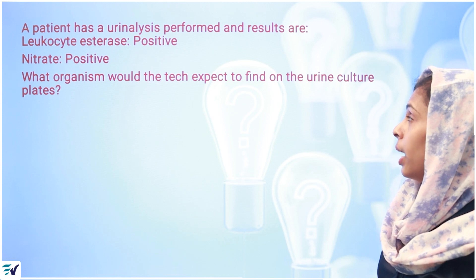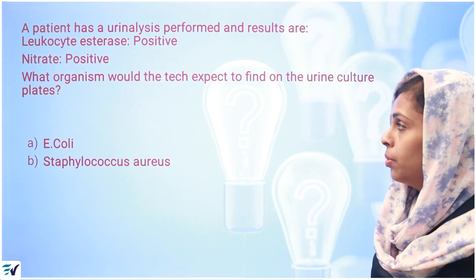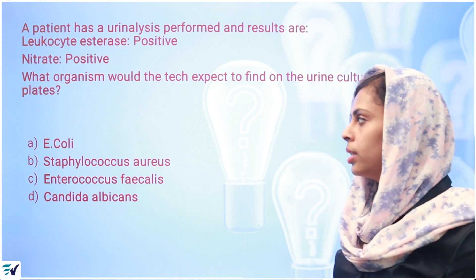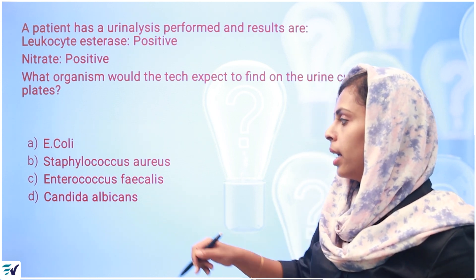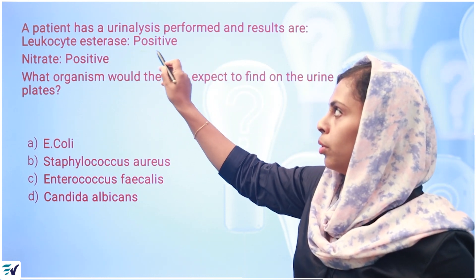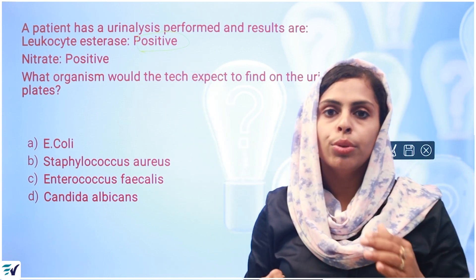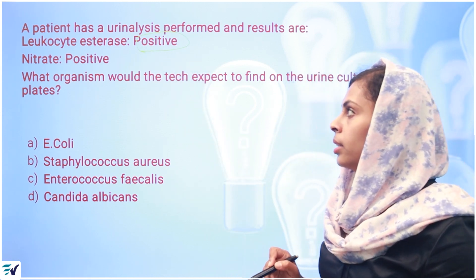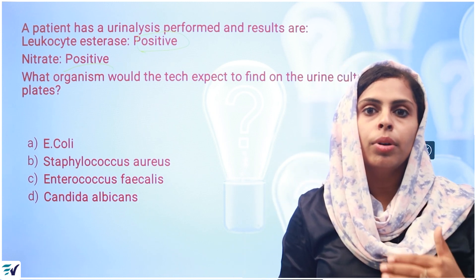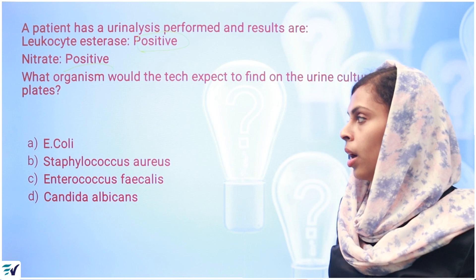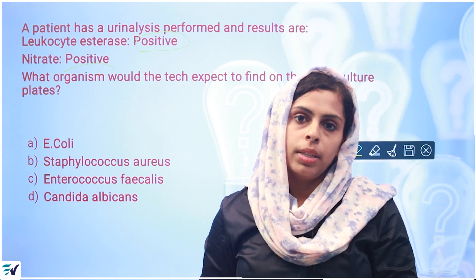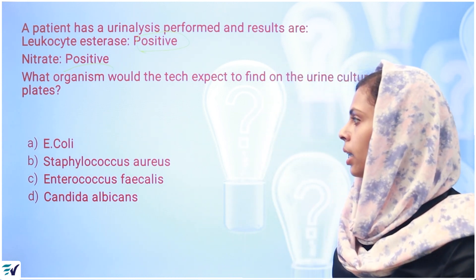Next question: A patient has a urinalysis performed and the results are leukocyte esterase positive and nitrate positive. What organism would the tech expect to find on the urine culture plates? Options are E. coli, Staphylococcus aureus, Enterococcus faecalis, and Candida albicans. Leukocyte esterase positive means inflammation is present. Nitrate positive means the organism is a nitrate reductor. Enterobacteria are called nitrate reductors.